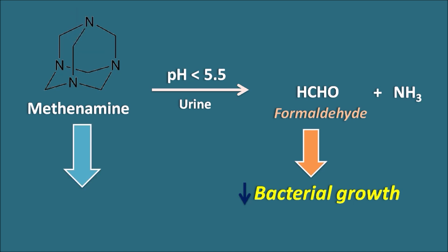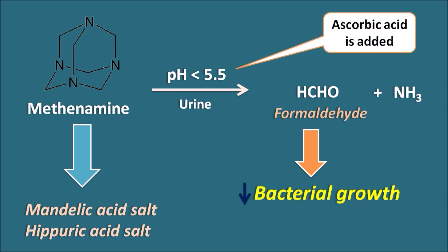In this way, Methenamine acts as a source of formaldehyde which inhibits bacterial growth in the urine. To increase the efficiency, Methenamine is given as its salts like the mandelic acid salt or hippuric acid salt. In order to render the urine acidic in nature, sometimes Methenamine can also be given along with ascorbic acid. This ascorbic acid renders the pH of the urine to less than 5.5, where the Methenamine can split into formaldehyde to produce its bacteriostatic effect.